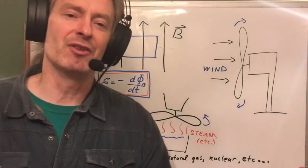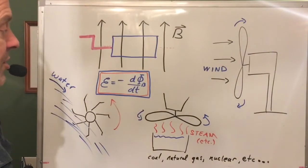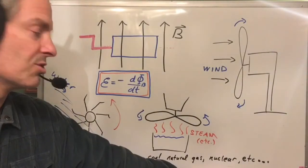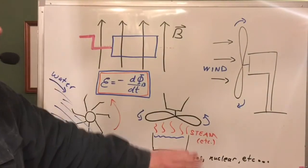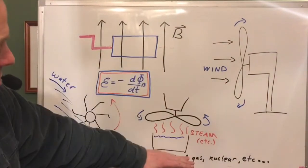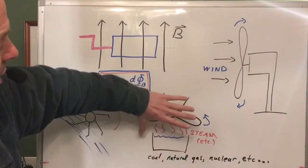Nuclear power is used to do the same thing. It's just another way to heat stuff up, to boil water or something else, and have it turn a turbine and rotate loops of wire in a magnetic field.